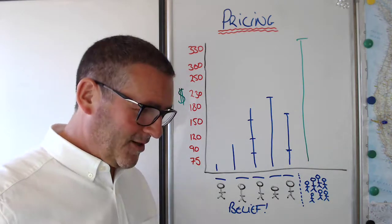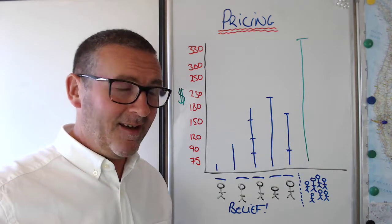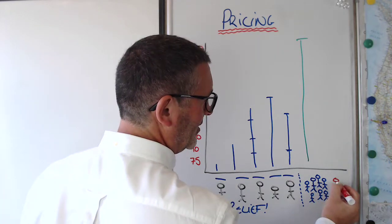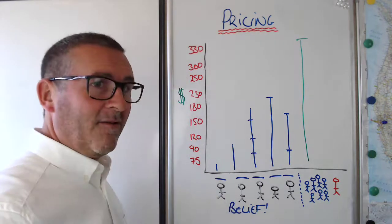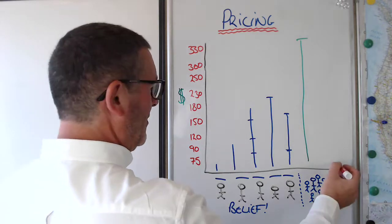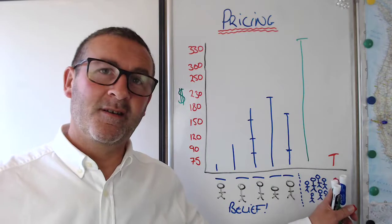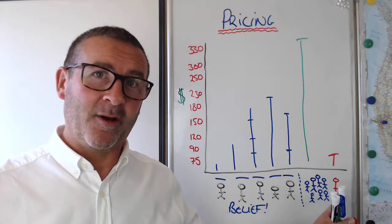We had a guy that started working with us and his name is Randy. And when he started with us, this is little Randy here. He's in Colorado Springs and his billable hour was $85 an hour. That's where he was, $85 an hour.